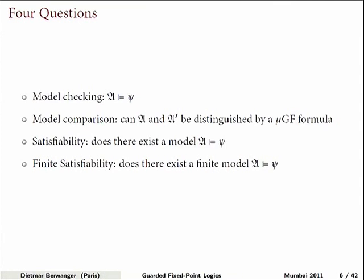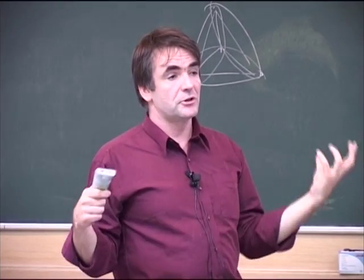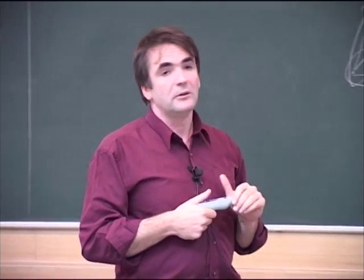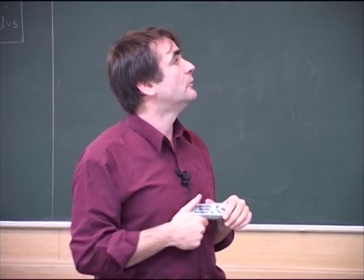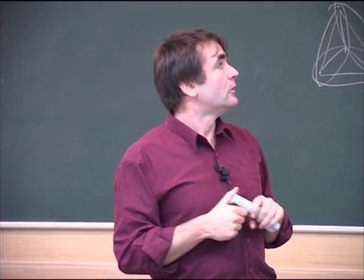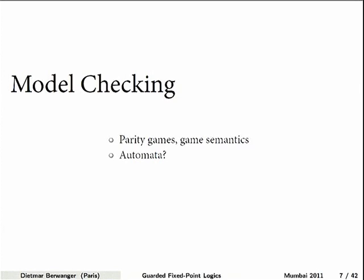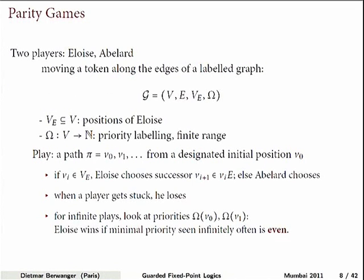We want to look at questions of: given a formula and a structure, we want to know whether the formula is true in the structure. Then given two structures, we want to know whether there exists any formula that can distinguish them. Then given only a formula and no structure, we want to know whether there exists a model, or even whether there exists a finite model. Let's see how we approach these things knowing less and less about the structure. If we know all about the structure, it's about model checking.